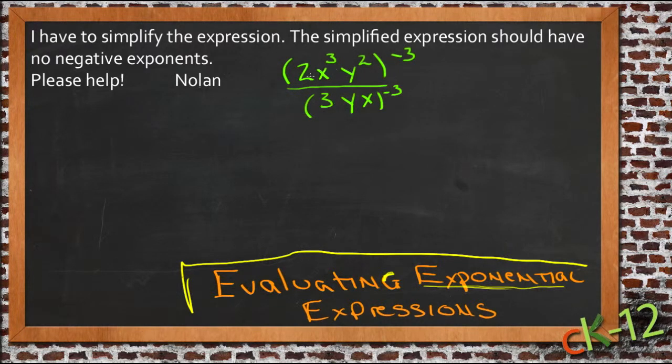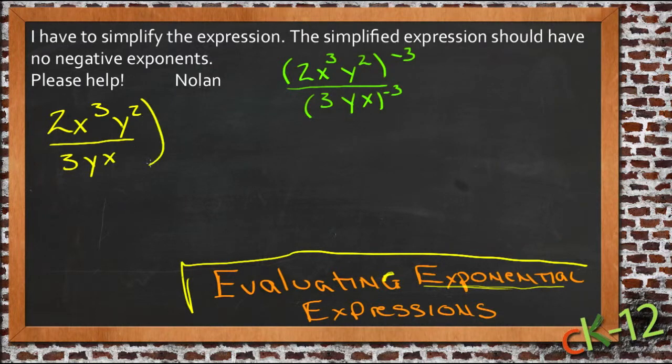Your expression has one term on top that is raised to the power of negative 3, and another on the bottom which is also raised to the power of negative 3. Now since those are both raised to the same negative power, we could write that as a single fraction raised to that power. So let's write this as 2x cubed y squared over 3yx, and then the whole thing to the power of negative 3.